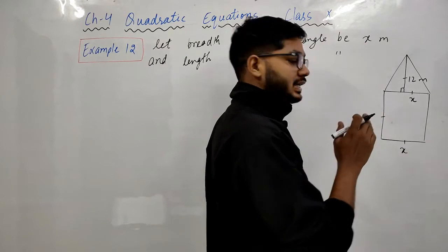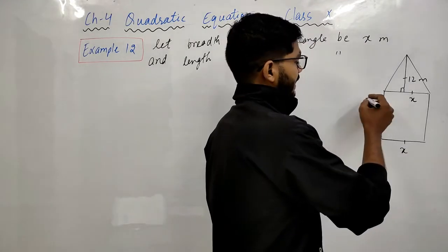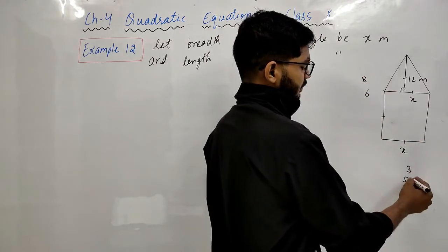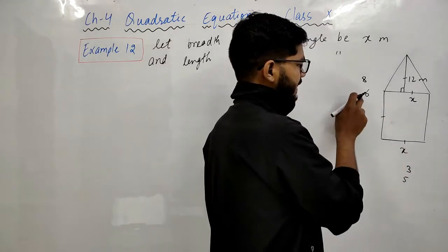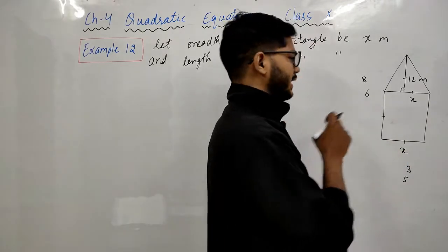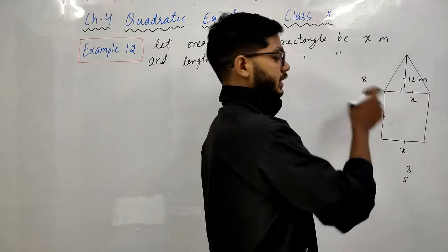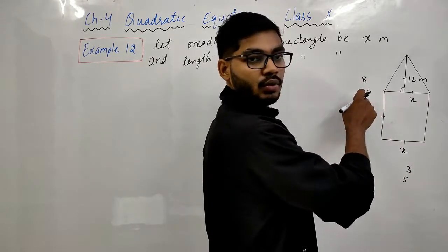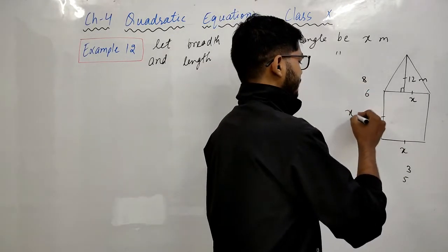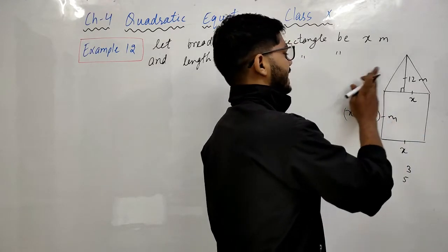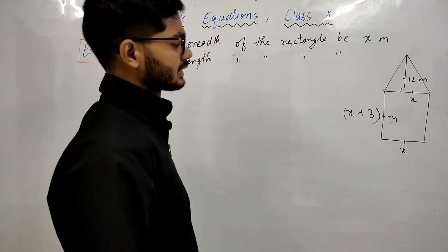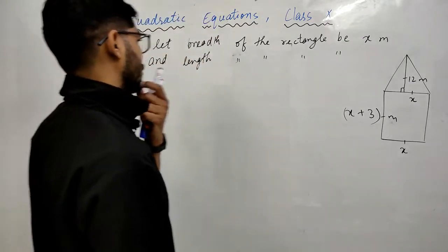Question में कहा है — breadth is 3 meters less than its length। मतलब जो भी इसकी length है, उससे 3 कम होगी इसकी breadth। यानी length = x + 3। आप चाहें तो breadth को x और length को x minus 3 भी ले सकते हैं, लेकिन फिर solution का तरीका अलग होगा।